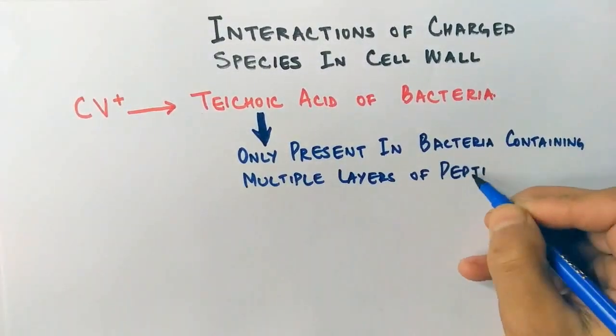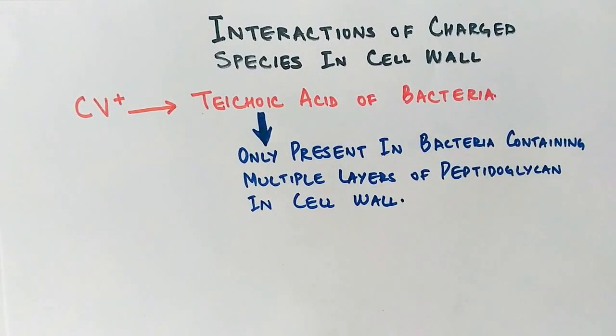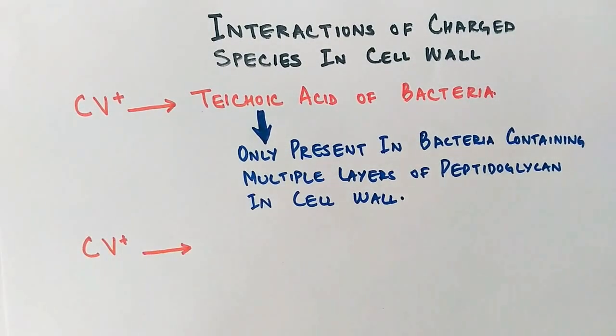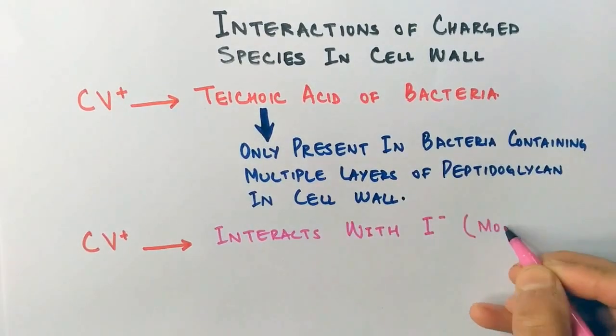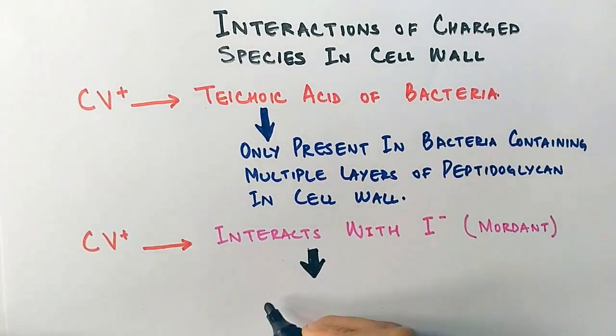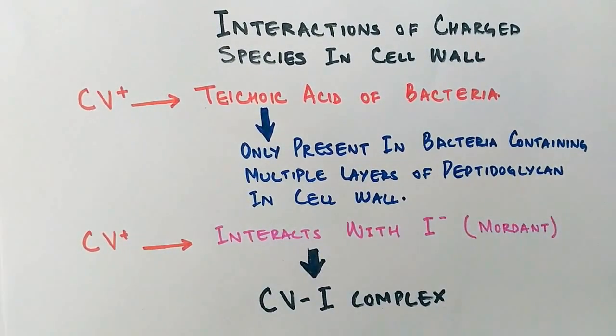In the second type of interaction, CV positive interacts with the mordant. We use iodine as the mordant, so CV positive makes a complex with iodine in the form of CV-I complex.